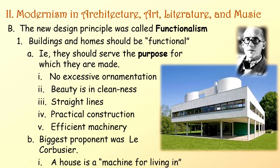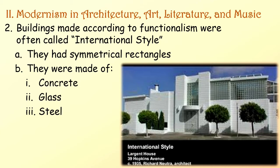Efficient machinery. Functionalism's biggest proponent was Le Corbusier. A house, he said, is a machine for living in—a very new and updated definition of what a house is. Buildings made according to functionalism were often called the international style. They had symmetrical rectangles and were made of concrete, glass, and steel—products of the Industrial Revolution.